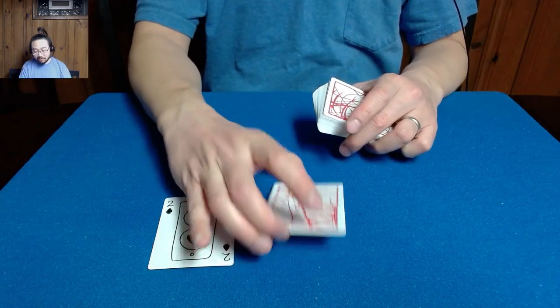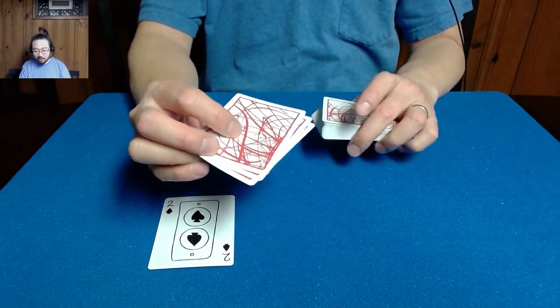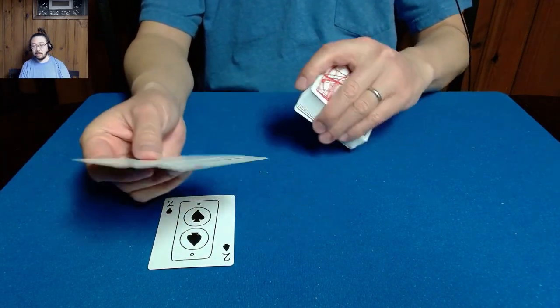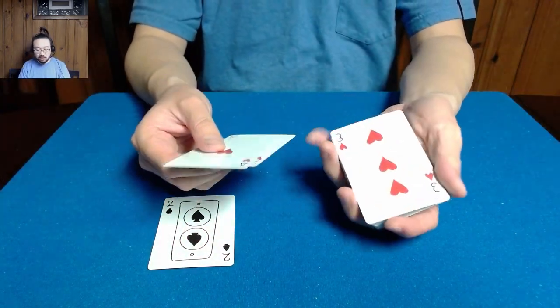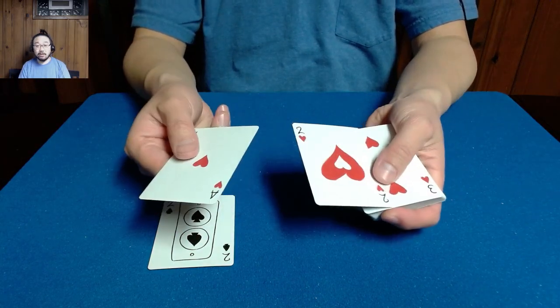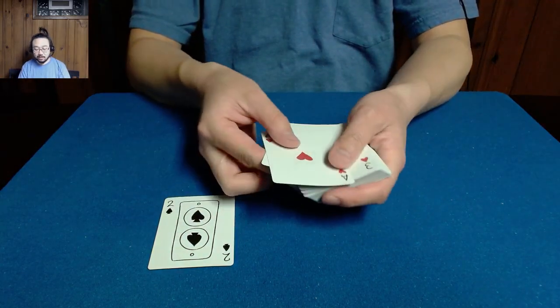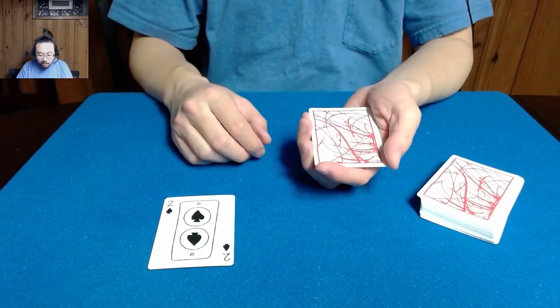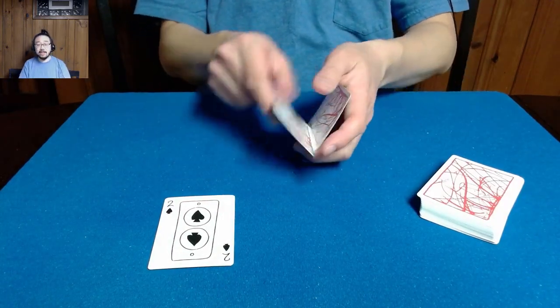And then we have set aside a few other cards over here. And I just want to show you that these are the three of hearts, the two of hearts, and then the ace of hearts.